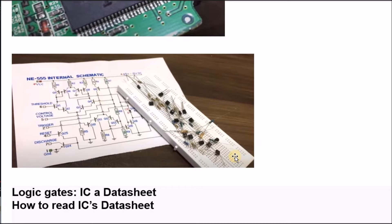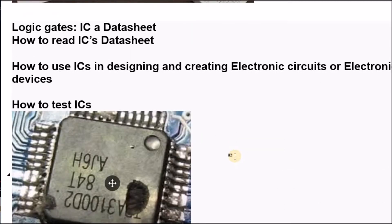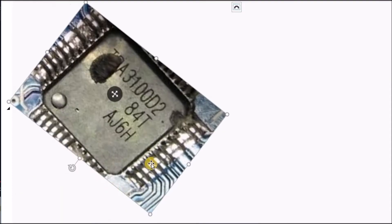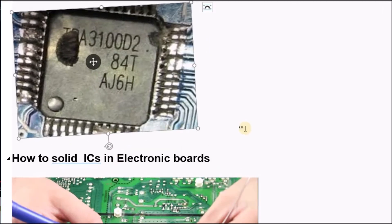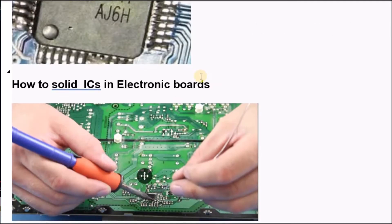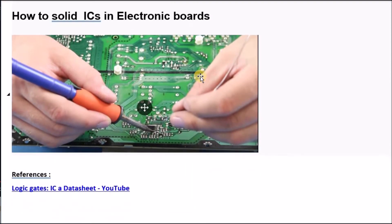Each IC has a serial number. According to that number, we can find the data sheet for each IC easily from the internet. As we see in the picture, this is a damaged IC, but we can still see its serial number. Using this serial number, we can obtain and buy a replacement IC. We will also check out how to solder ICs onto an electronic board, and we have references for this.